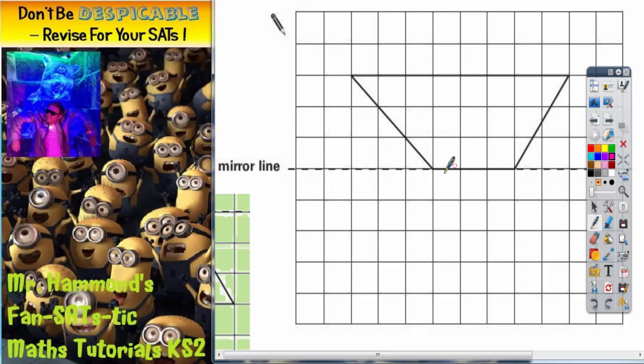Now there are three methods we could use to do this. Method number one would be just to get a mirror, place the mirror on the mirror line, look inside the mirror and what you see inside the mirror is what you have to draw on the other side of the mirror line. Some people can answer this question using only a mirror alone.